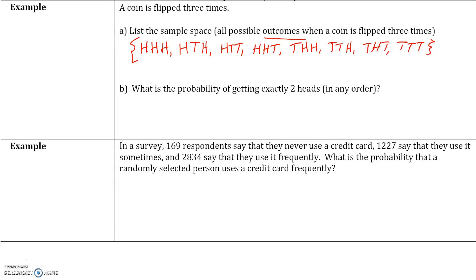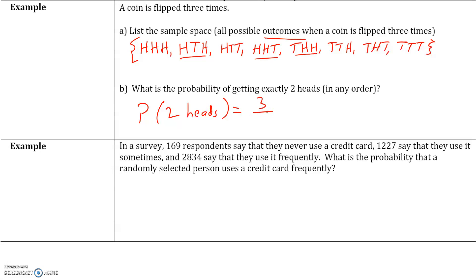In part B, what is the probability of getting exactly two heads? Looking at our sample space: HHH has three heads (exclude), HTH has two heads (include), HTT has one head, HHT has two heads (include), THH has two heads (include), TTH has one head, THT has one head, TTT has no heads. Exactly two heads occurs three times out of eight total outcomes. So the probability of getting exactly two heads is three out of eight.